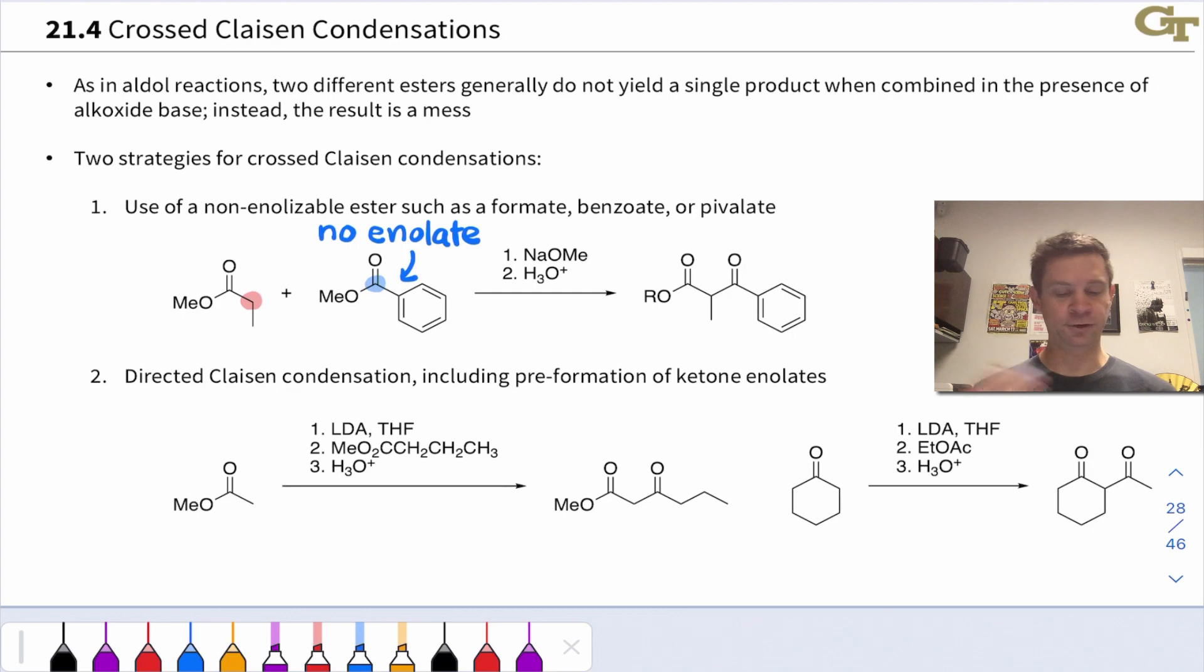So for example, in a directed Claisen condensation, we would use a very strong base like LDA to generate the enolate quantitatively. And then we add in the ester that we want to act as the electrophile to a solution of the enolate. So LDA forms the enolate completely, 100%, and then that reacts with the electrophile to be acylated. Notice that this is the electrophilic portion on the right, and what we've done essentially is acylated the methyl acetate here by pre-forming the enolate of methyl acetate and then adding in the electrophile. So the new bond is formed here and we end up with a beta-keto ester.